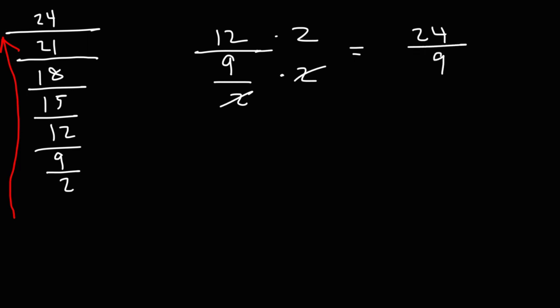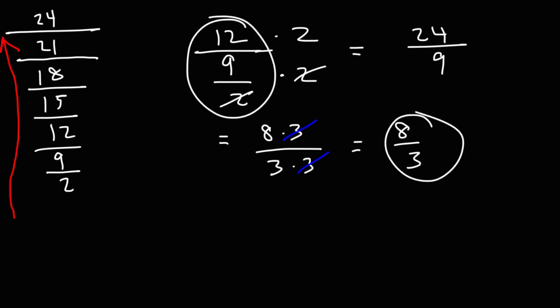Now we can reduce this fraction. 24 is 8 times 3. 9 is 3 times 3. And so we could cancel a 3, and thus we're left with 8 over 3. So 12 divided by 9 over 2 is equivalent to 8 over 3. So let's replace 12 over 9 over 2 with what we have, 8 over 3.